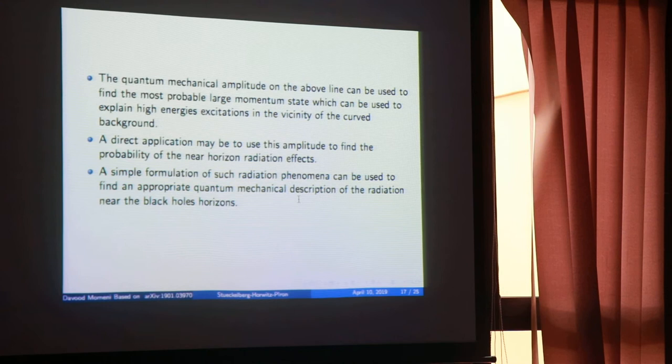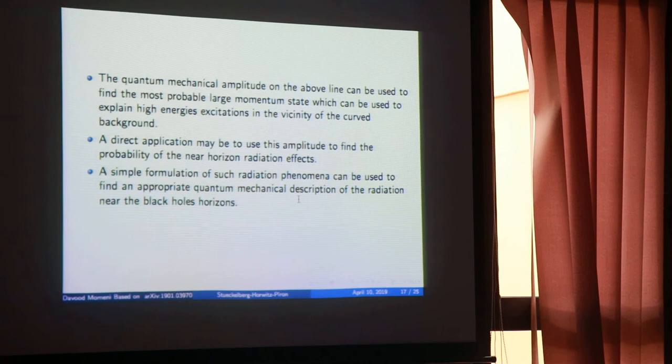Hawking radiation is pair production near the horizon, but there is still no quantum mechanical proof. On one side you have gravity, and you are trying to find the spectrum of the particles. You need to use scattering theory if you want to use quantum mechanics, and currently what we have about the particle spectrum near the horizon is just estimation.